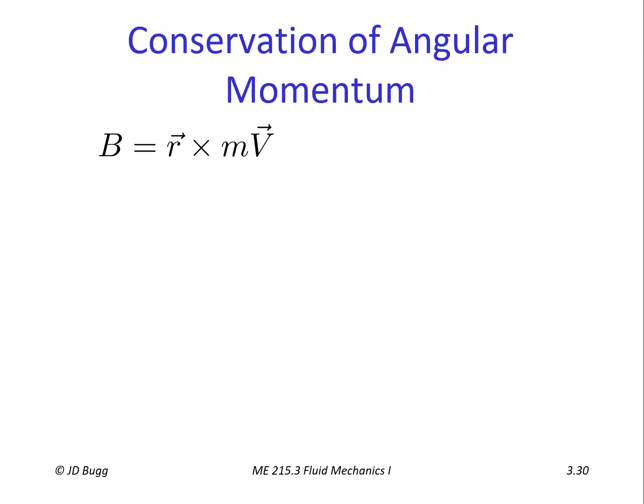So angular momentum is defined as r cross mv. The next thing we need to do is identify the angular momentum per unit mass, so we divide by mass. That gives us beta equals r cross v — that's really all we need to do before substituting into the general form of Reynolds Transport Theorem.